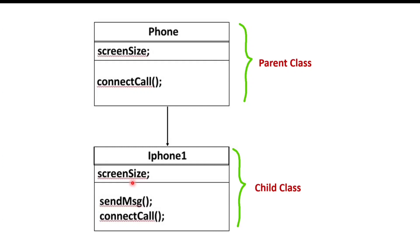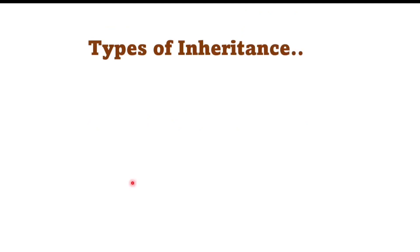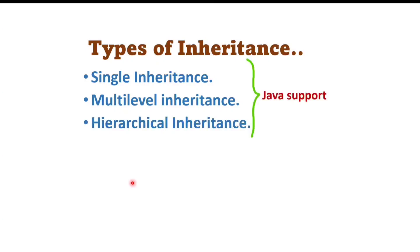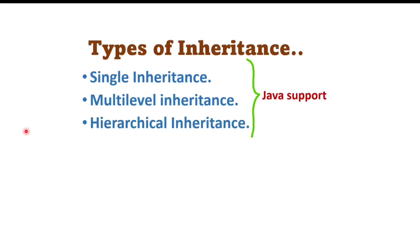There are three types of inheritance that Java supports: single inheritance, multilevel inheritance, and hierarchical inheritance. Java supports single, multilevel, and hierarchical inheritance using classes. But Java doesn't support multiple inheritance using classes. So the question comes: why doesn't Java support multiple inheritance? What is the reason behind it?